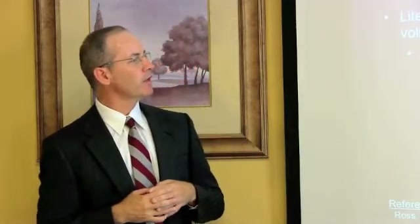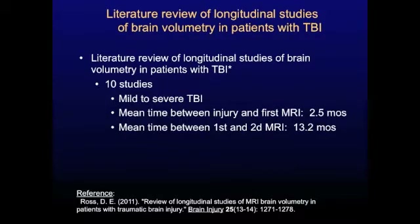That's the power of the longitudinal design, because you're comparing the patient to his own baseline. We thought that would be a more powerful design for detecting brain atrophy in our patients. This review identified 10 studies in the literature, covering the gamut from mild to severe TBI. The mean time between the injury and the patient's first MRI was 2.5 months, and the mean time between the first and second MRI was 13.2 months.